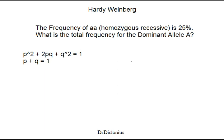Let's first figure out what we're given and what we're solving for. We're given aa, the homozygous recessive, at 25%. Homozygous recessive is represented by Q squared. So we know that Q squared is 25%, or 0.25.